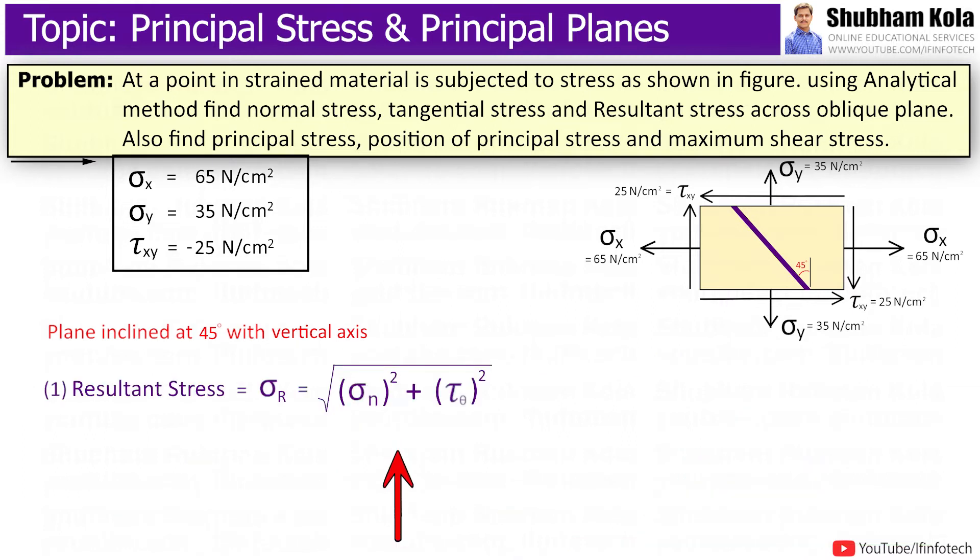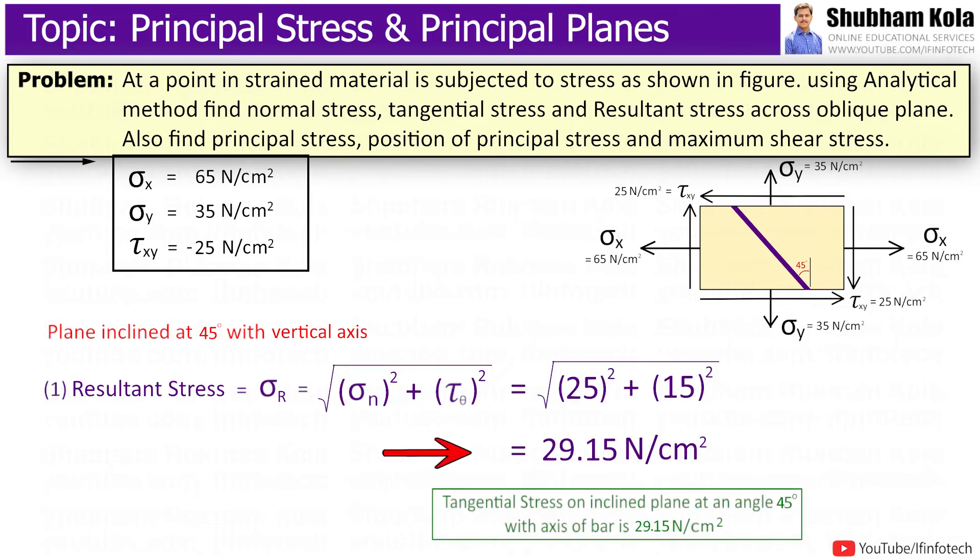And resultant stress is under root sigma x square plus tau theta square. Therefore, resultant stress we got as 29.15 newton per centimeter square.